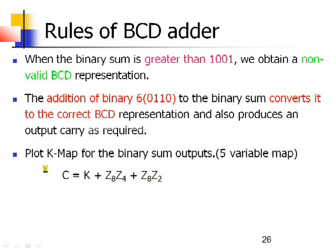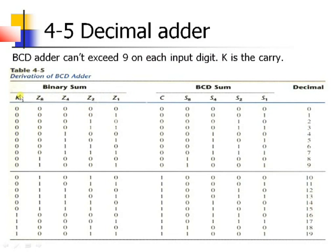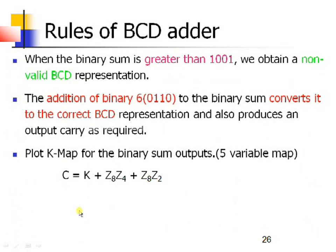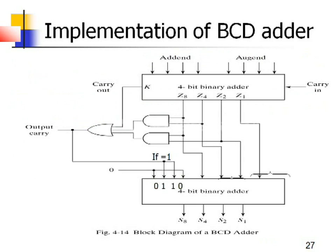I have plotted all these functions on the K-map and obtained the output function: K plus Z8·Z4 plus Z8·Z2. Now we have to design this circuit using full adders. Here I have a 4-bit binary adder with outputs Z8, Z4, Z2, and Z1, where 8, 4, 2, 1 are the weights — and this is the circuit designed from that expression.